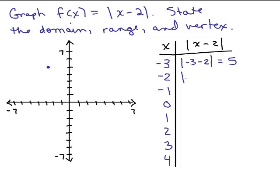Now we'll put in −2 for x. That gives us |−4|, which is positive 4. So we've got the ordered pair (−2, 4), about right here. Next, we'll put in −1. That gives us |−3|, which is positive 3. So we have (−1, 3).